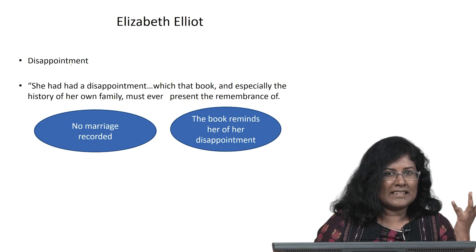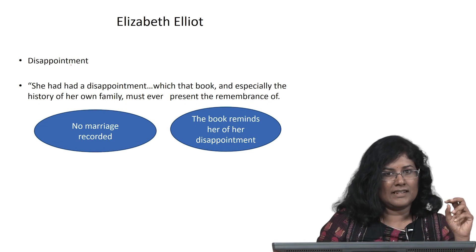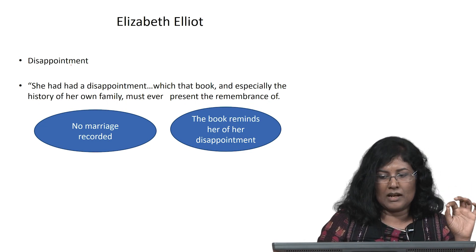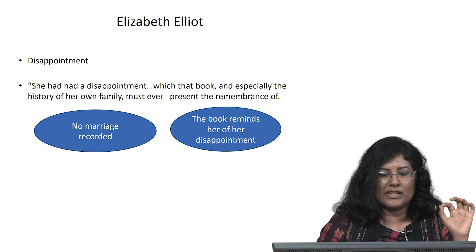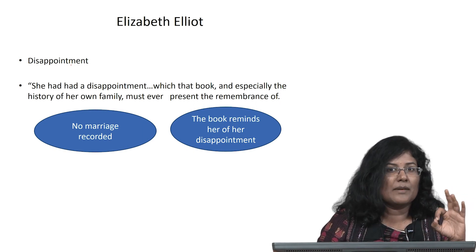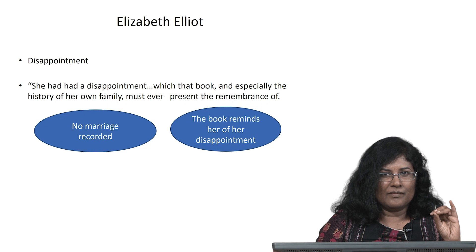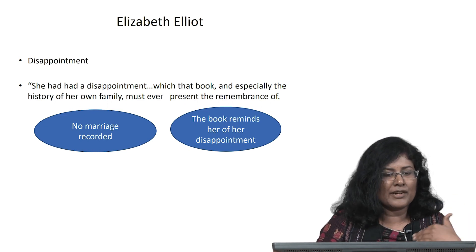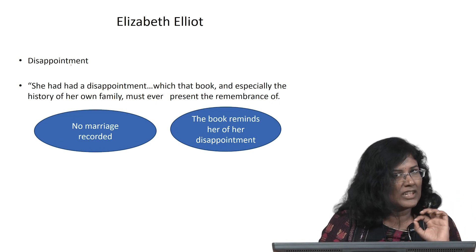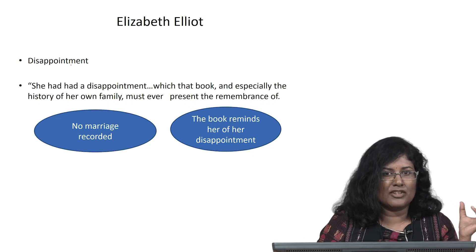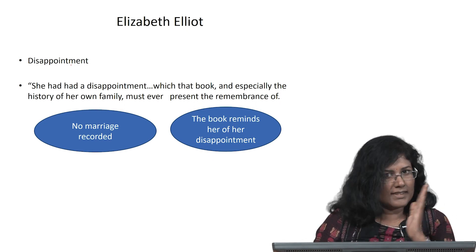Elizabeth Elliot is introduced by the narrator, who says she had a disappointment which the book — especially the history of her own family — must ever present the remembrance of. The book referred to here is the Baronetage that the father is fascinated by, and it is a constant reminder of a particular disappointment, which is disappointment in love. She has not found a suitable man to marry, and the book does not record her marriage.